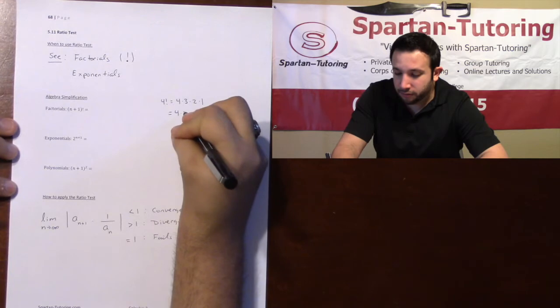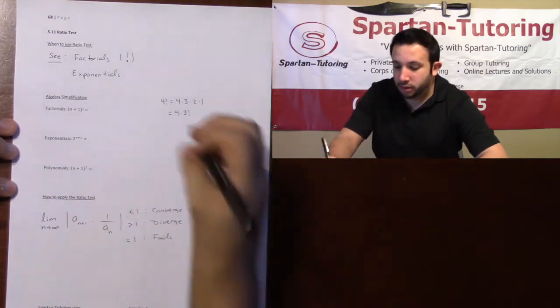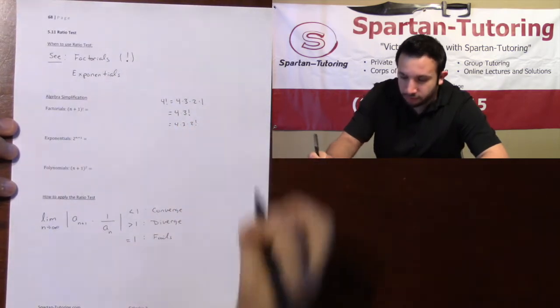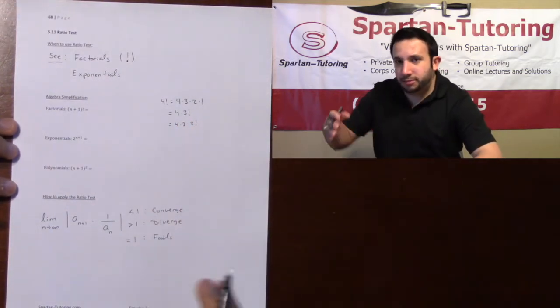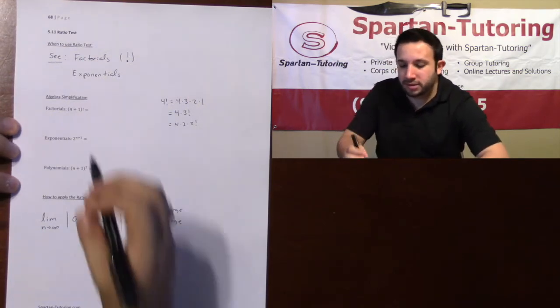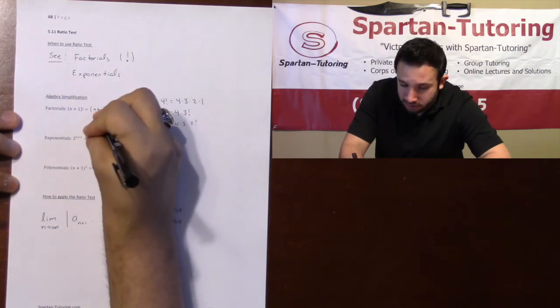But isn't this also equal to 4 times 3 factorial? Right, 4 times 3 times 2 times 1. I can make this 4 times 3 times 2 factorial. The point is I can keep pulling one out and throw the factorial at the end whenever I want.